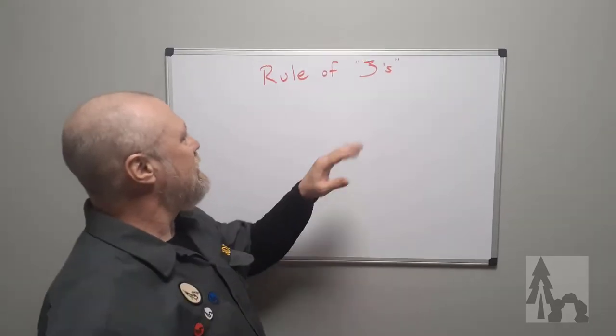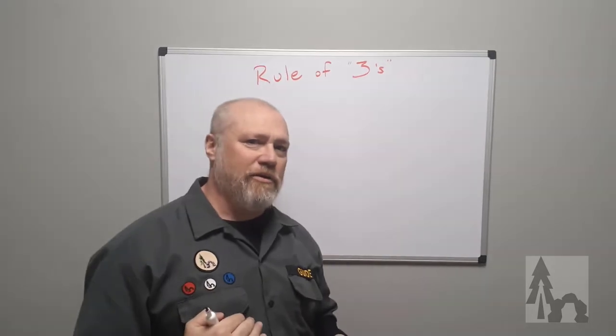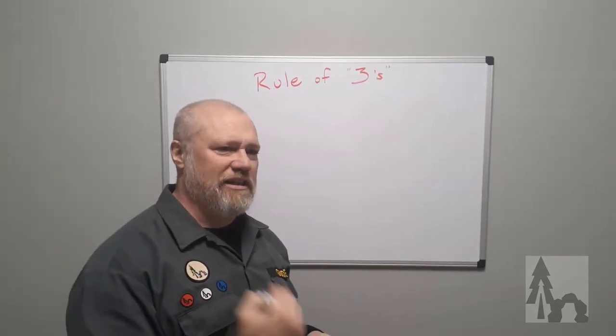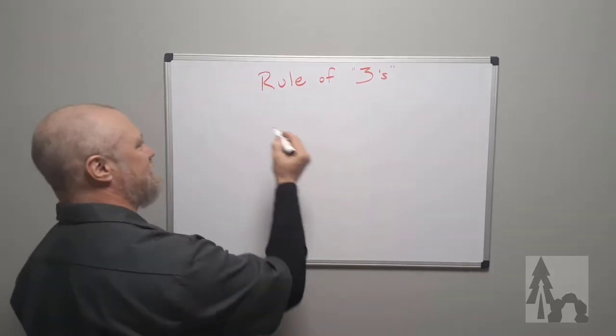The Rule of Threes, I didn't make it up, it's just been around for a while. It kind of corresponds with Maslow's hierarchy of needs: the first two levels, physiological needs and then personal safety.